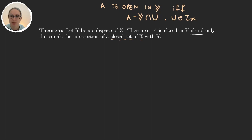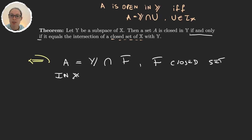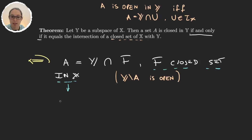Let's prove it. We have an if and only if, so we have to prove both directions. Let's start with the first direction: we have that a set a is the intersection of y with f, where f is a closed set in x. I have to prove that this set a is closed in y, so I have to prove that y minus a is open. Now because f is a closed set in x, then x minus f is open.